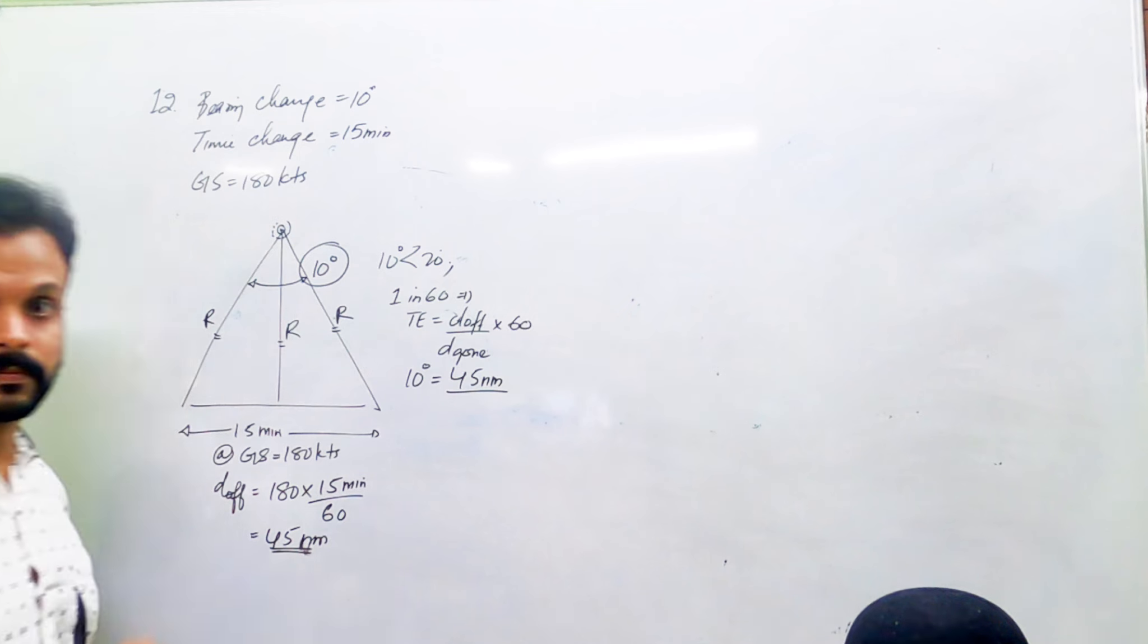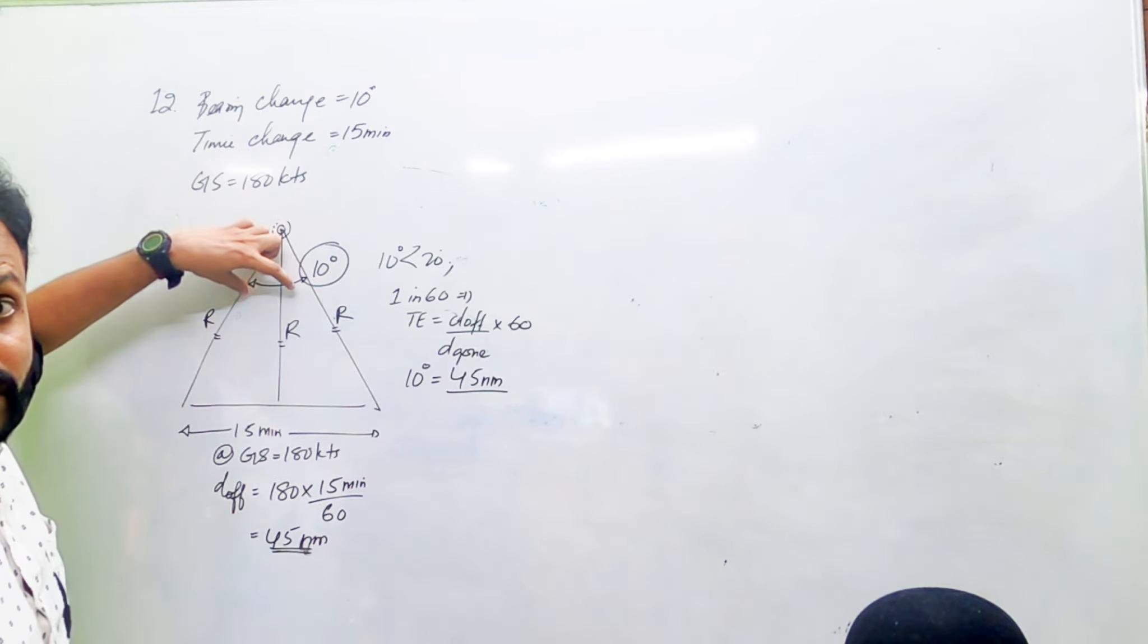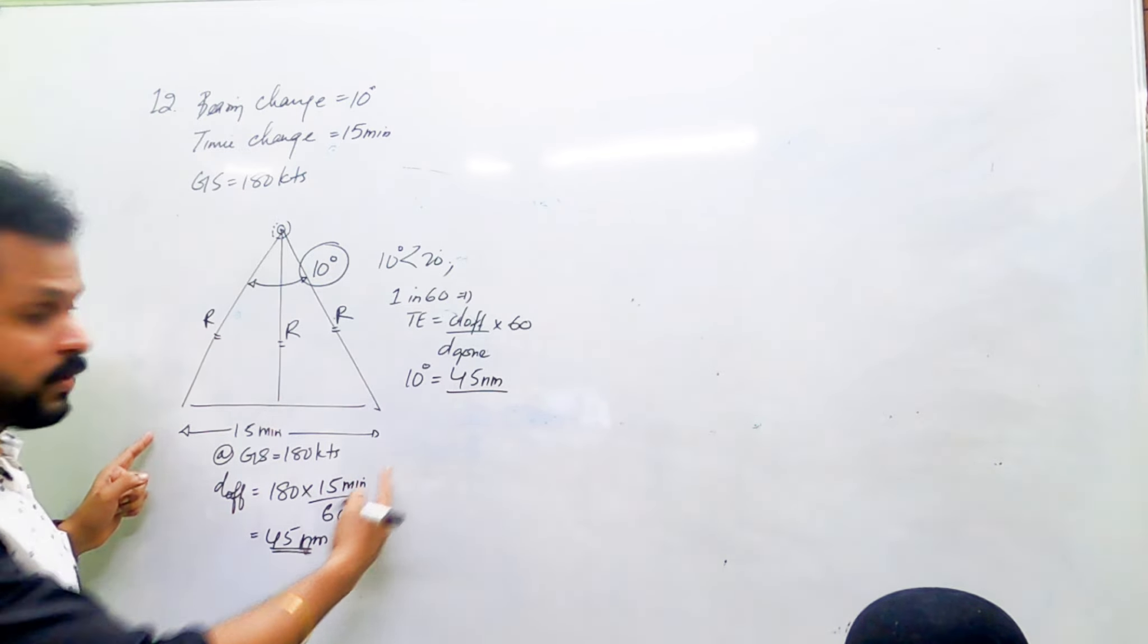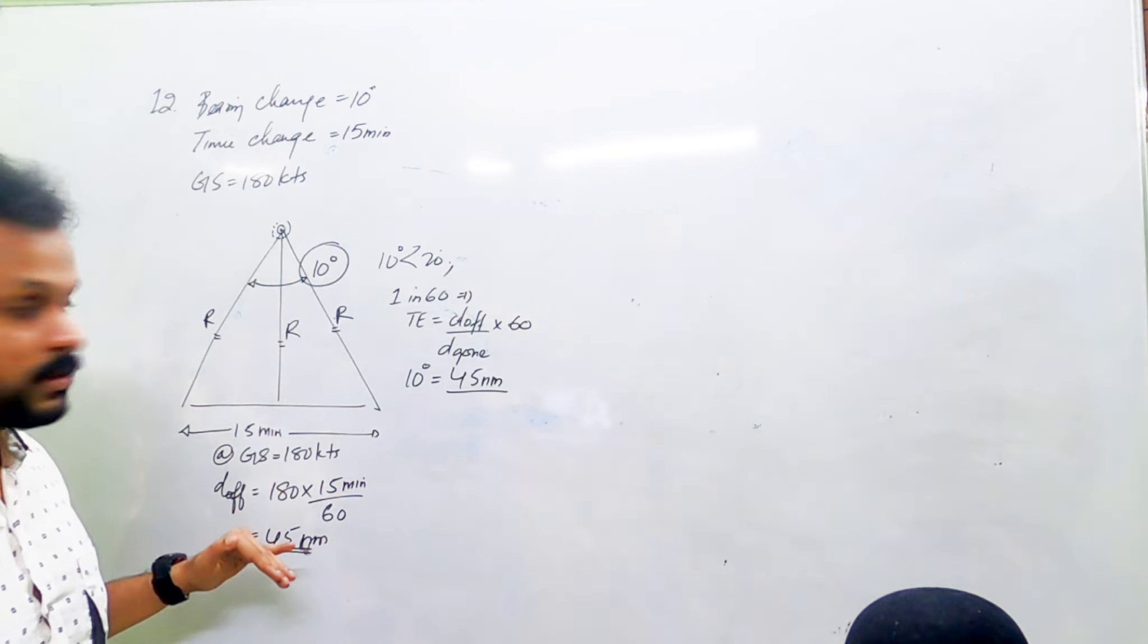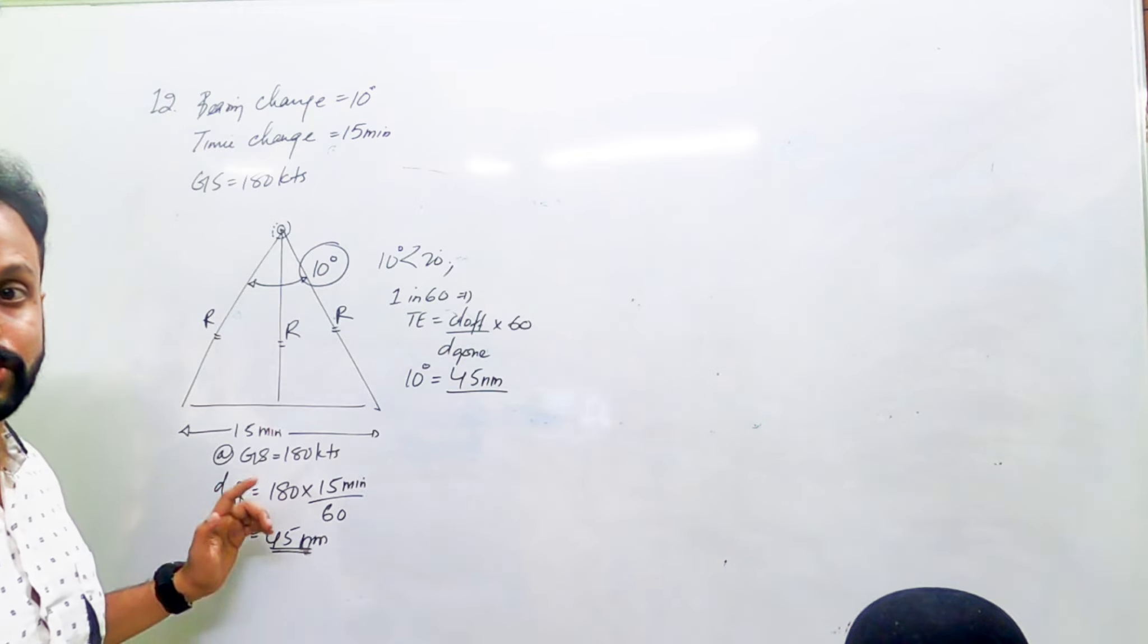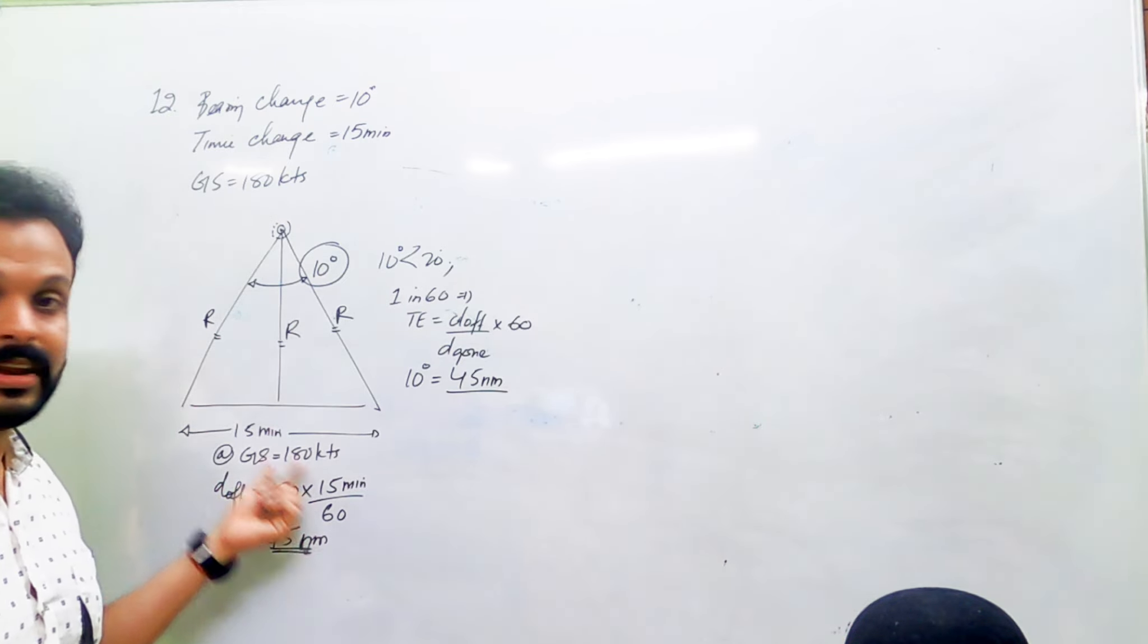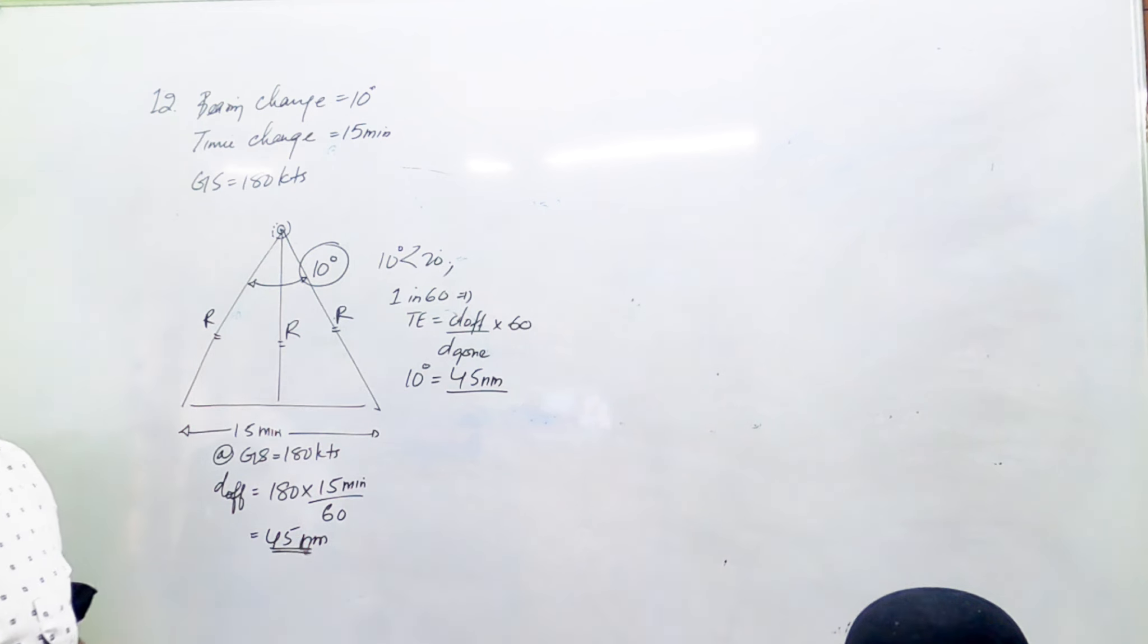Wait, how did you find distance OF? Distance OF is opposite to the track error. At 15 minutes and a ground speed of 180 knots, distance equals speed times time: 180 times 15 divided by 60.